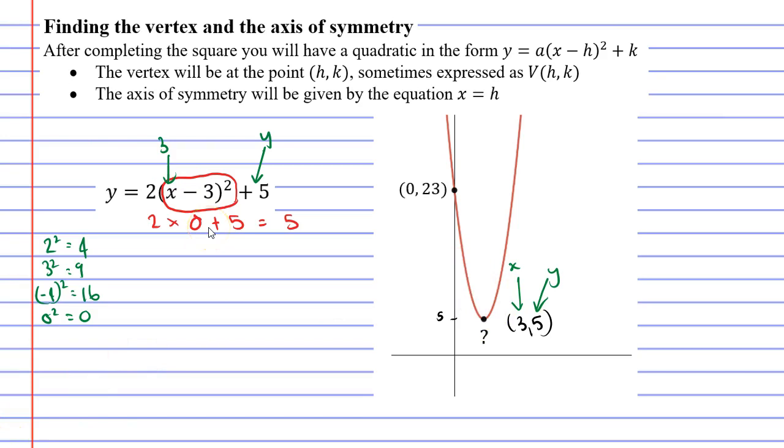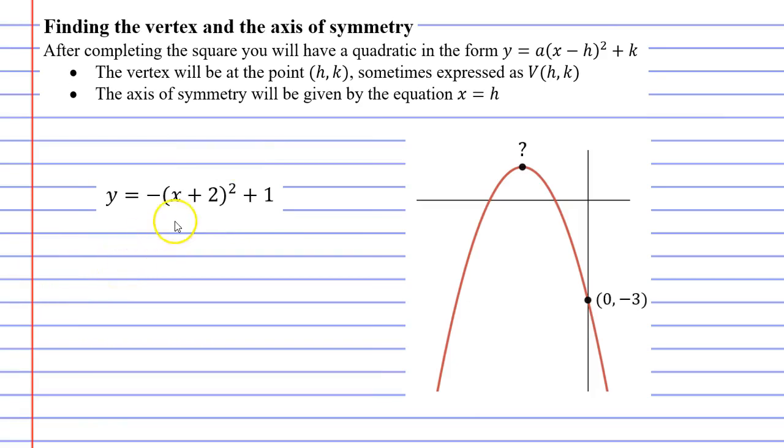Now the question is, will this work with a downward facing parabola? Let's take the downward facing parabola we can see here. We can see that this function is in the form y equals a(x minus h) squared plus k. Now in this case the a is negative 1, but that's irrelevant. We're looking at the h and the k. What will h equal? h will equal negative 2, because x minus negative 2 is the same as x plus 2. And our k will equal positive 1. We just write that k equals 1.